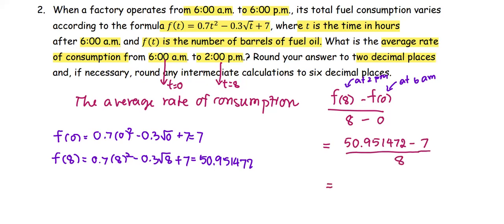After we simplify the numbers, we get the value 5.49393398 and so forth. But we are asked to round the answer to two decimal places, so the answer is 5.49, and the unit is barrels per hour.